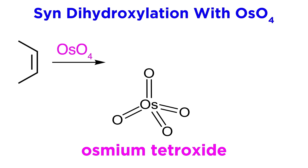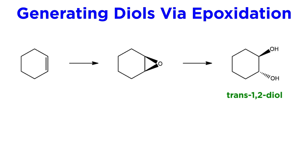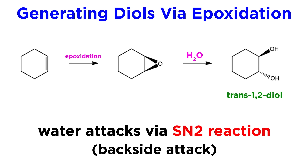One more important reaction that utilizes an alkene substrate is dihydroxylation. This can be done with osmium tetroxide to yield the syn-1,2-diol, which follows this stereochemistry because both hydroxyls are delivered from the same compound. Conversely, the trans-1,2-diol can be generated via epoxidation and subsequent hydrolysis, since once the epoxide is formed, if water attacks to open up the ring, it will do so via SN2 and a backside attack, so the two resulting hydroxyls will necessarily be trans to one another.